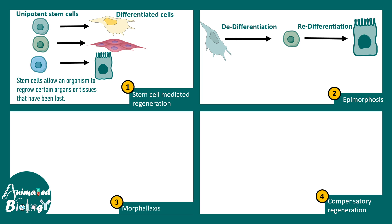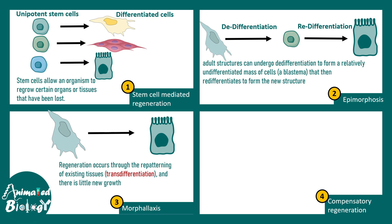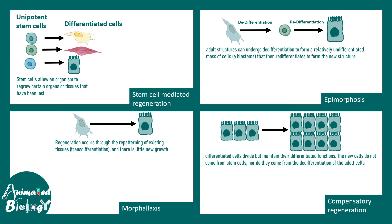In epimorphosis, a differentiated cell type becomes de-differentiated and eventually re-differentiates to a new cell type. Another process is morpholexis, where transdifferentiation happens — meaning one adult cell type becomes another adult cell type. Lastly, in compensatory regeneration, cells do not come from stem cells or differentiated adult cells; instead, existing cells simply divide more and increase in number.